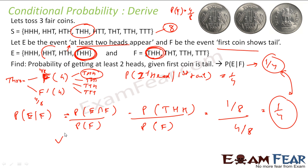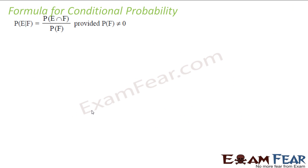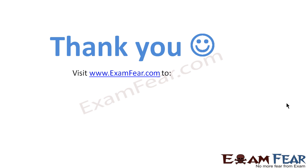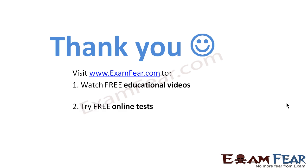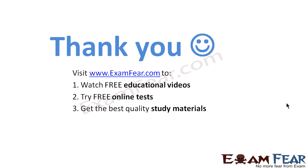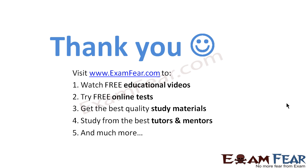Thus I can confirm that this formula holds true: probability of getting E given condition F equals probability of E intersection F divided by probability of F. The condition is that probability of F must not be zero — if it is zero, the expression becomes undefined. Visit examfear.com to watch free educational videos, try free online tests, and get the best quality study materials. Thanks once again.